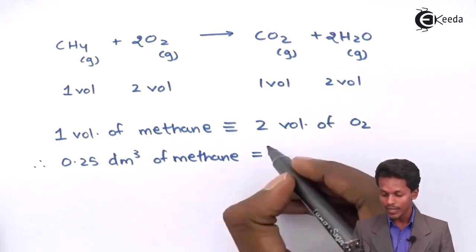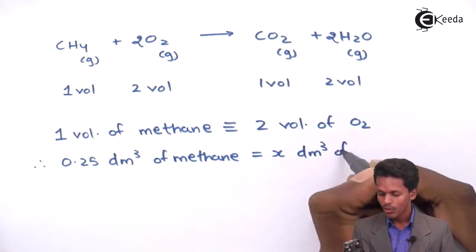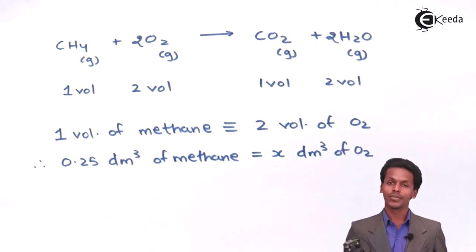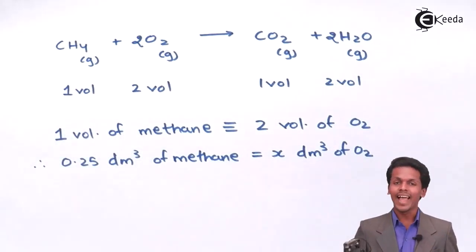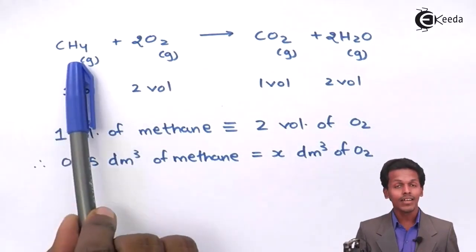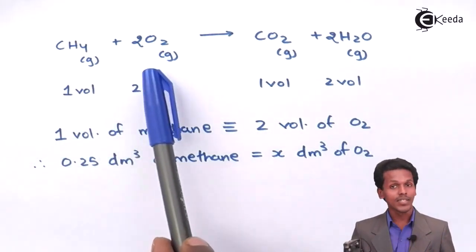So I could write it as x dm³ of O₂, that is, oxygen molecules. So, since it is present in a gaseous state, I could estimate that, the one liter of methane is reacted with two liters of oxygen.